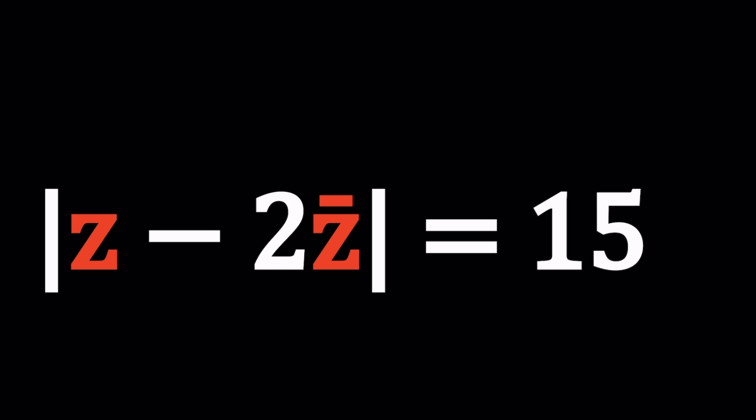We have |z - 2z̄| = 15 and we're going to be solving for z values. z is a complex number.